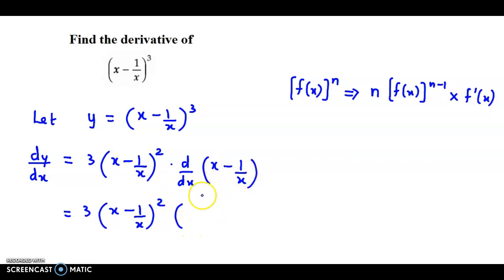Now in two terms we have derivative of x. x ka derivative is 1 and 1 upon x ka derivative is minus 1 upon x square. Already here there is minus so this becomes plus 1 upon x square. So this is the value for dy by dx.